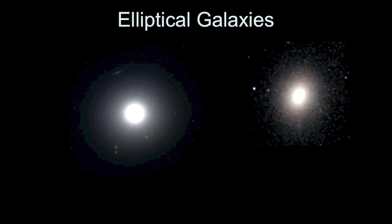Does this mean there were never any blue stars in an elliptical galaxy? No — it could be that blue stars were there in the past but are just not there anymore. We're not exactly sure where all the dust and gas went, but we do know that elliptical galaxies probably don't have a lot of star formation, because star formation needs dust and gas in order to occur.